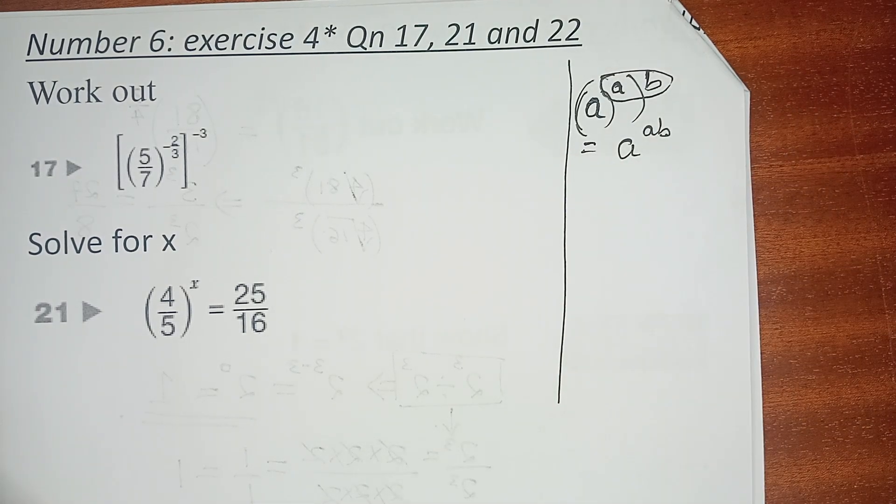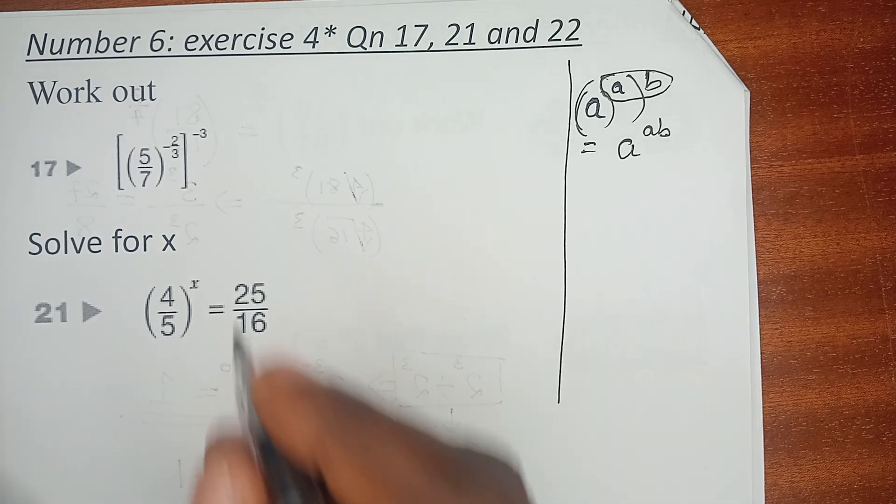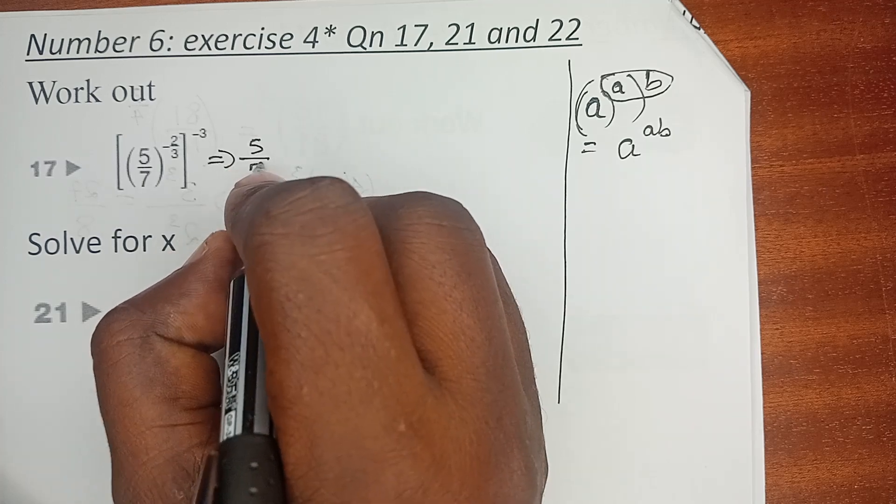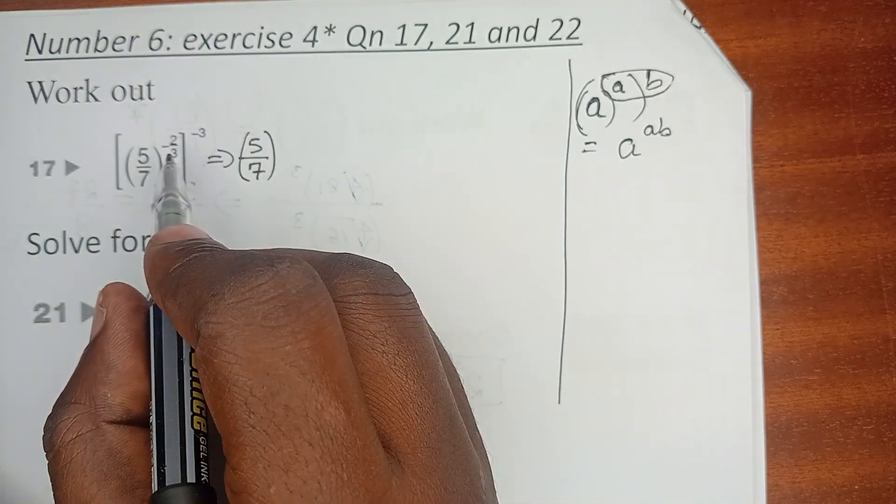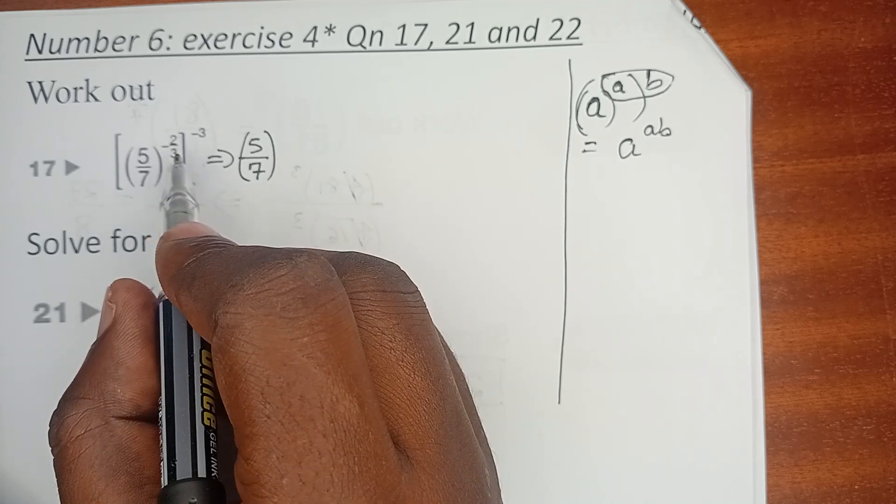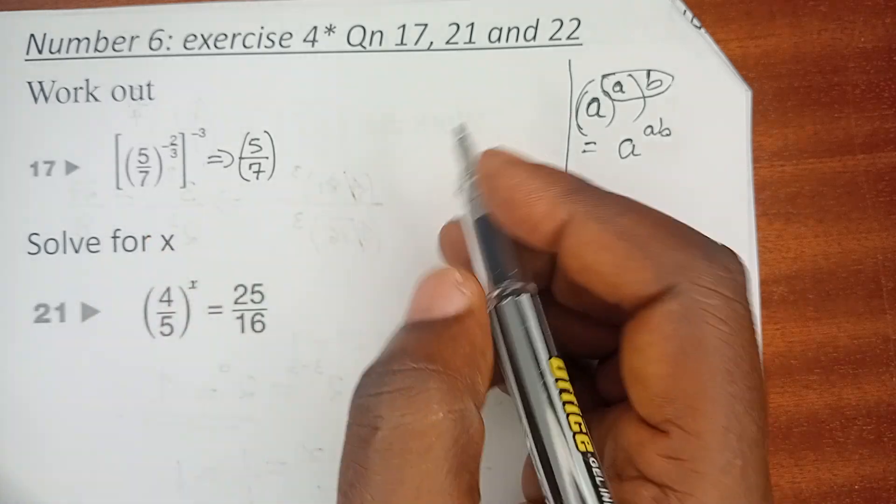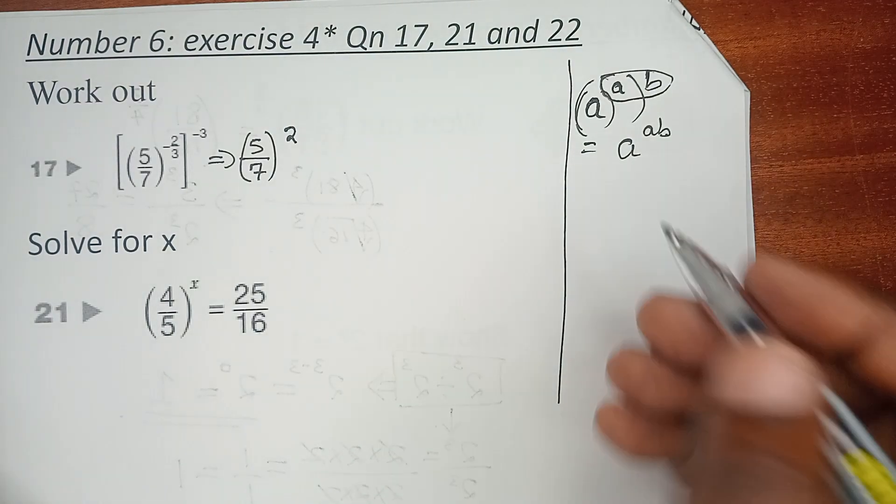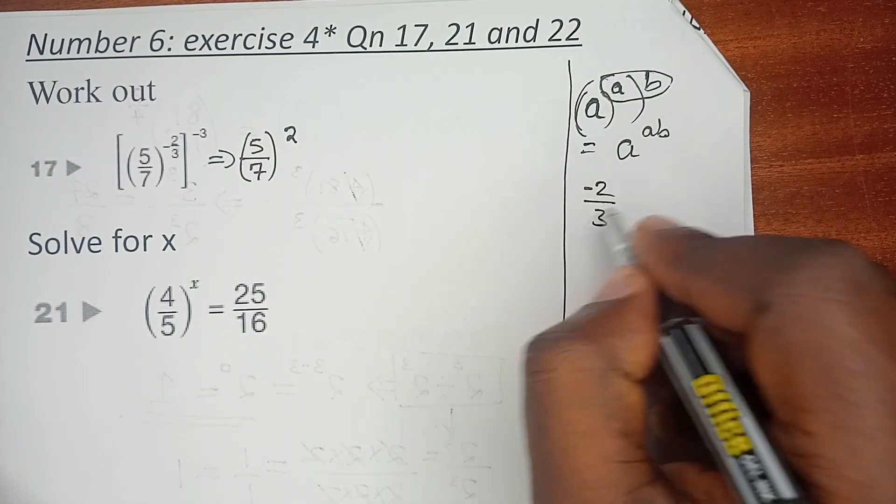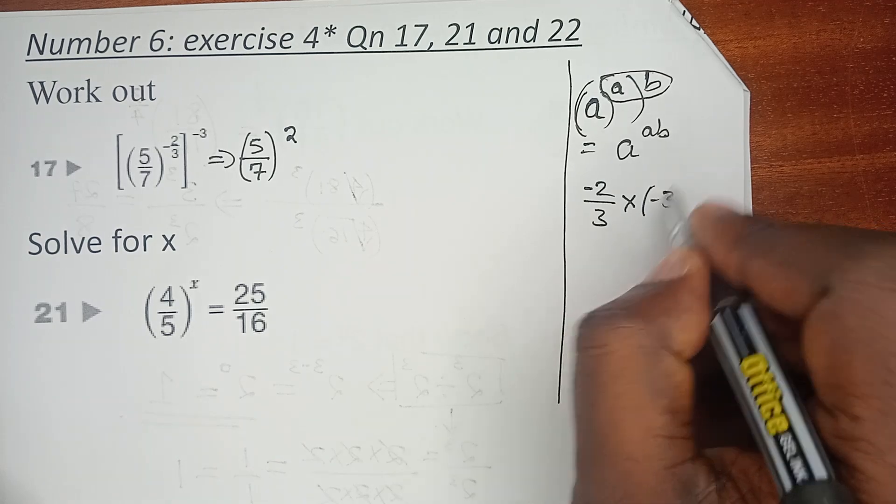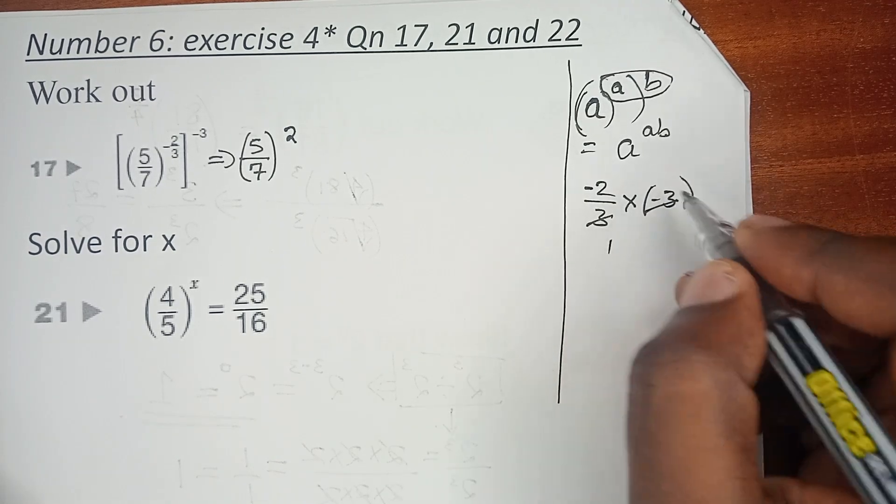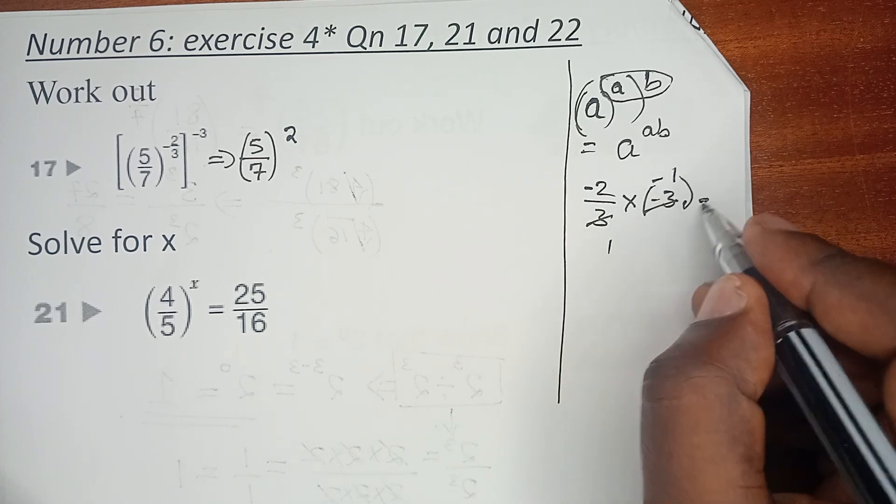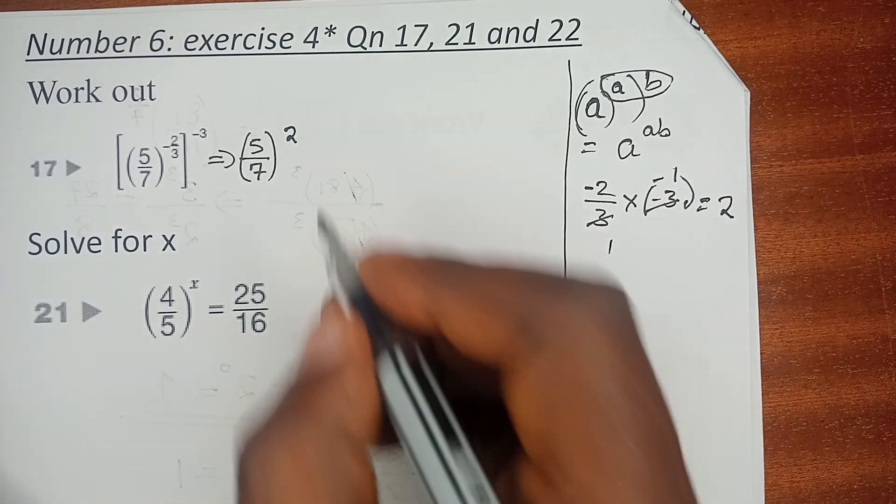And there is no difference here, so we have 5/7 raised to power -2/3 times -3. I would want us to work out -2/3 times -3, which is -2 times -1 equals 2.